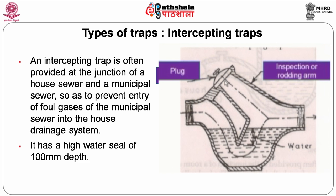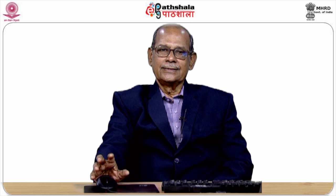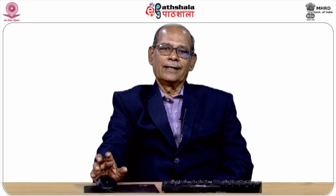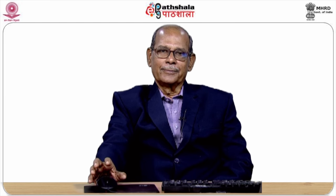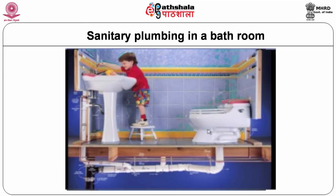In the intercepting trap, there is a provision for a cleaning arrangement. A plug is provided so that in case of any blockage, the plug can be removed and a flexible rod inserted to clean the drain system. Since solid waste may settle when velocity is low, clogging in drains is a common problem, so all traps must have a cleaning provision.